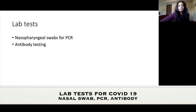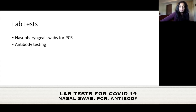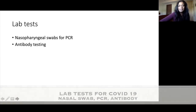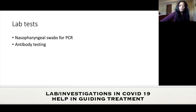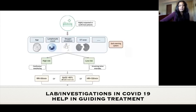There are two tests for COVID-19. The nasopharyngeal swab for PCR detects active infection and is used for diagnosis. Antibody testing is to test for immunity, but it is not yet a reliable test. A very low percentage of recovered patients are actually showing positive antibodies, so the clinical utility of this test is uncertain.